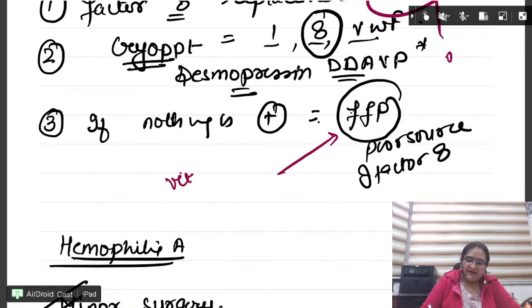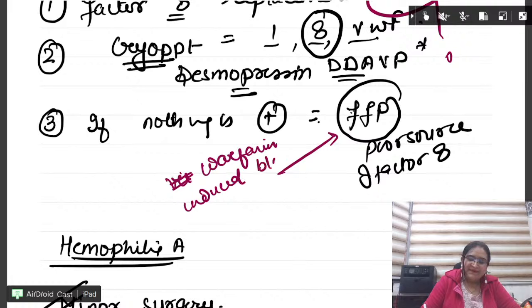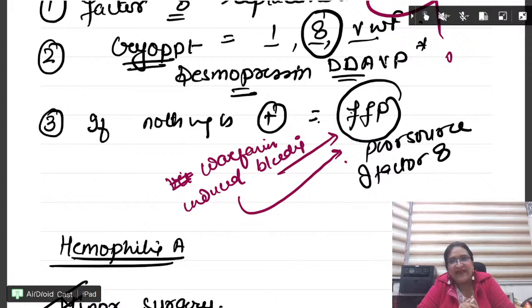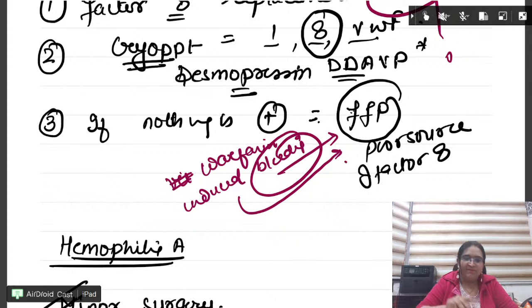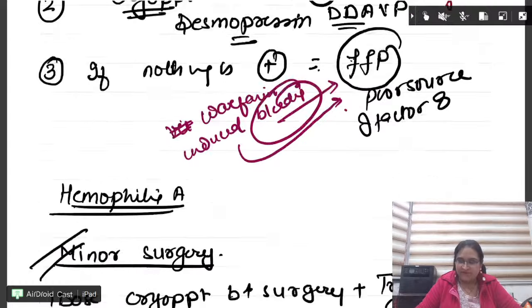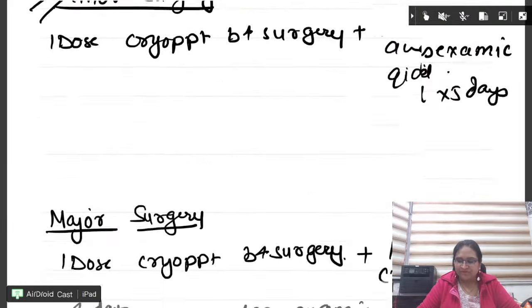Here only let me do two questions. X-linked recessive. So beta, please remember, males are going to be affected. Females are going to be carriers. Now there is a question which is a female has the feature of bleed into the joints, mucosal bleed, ecchymosis, and all those things. Plus, joint bleeding is there. Now the choice comes. Von Willebrand disease hai or hemophilia A hai.